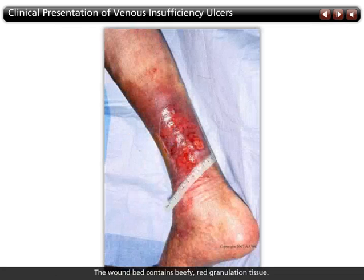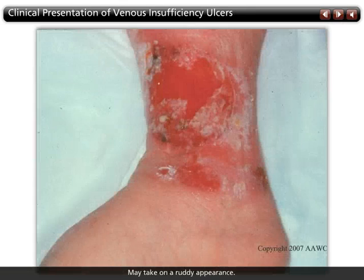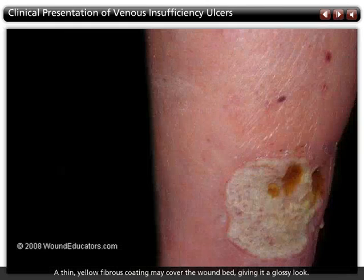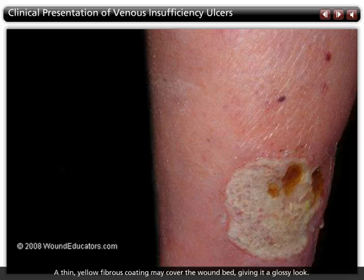The wound bed contains beefy red granulation tissue but may take on a ruddy appearance. A thin yellow fibrous coating may cover the wound bed, giving it a glossy look.